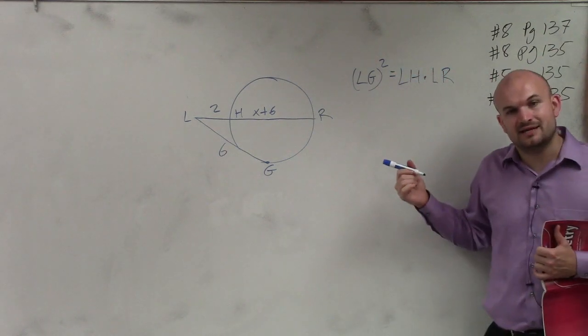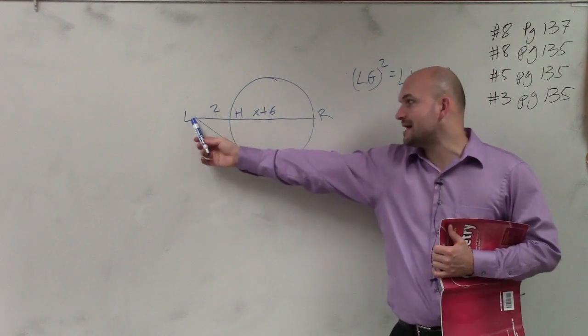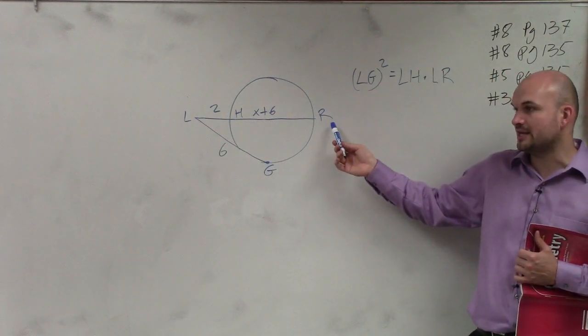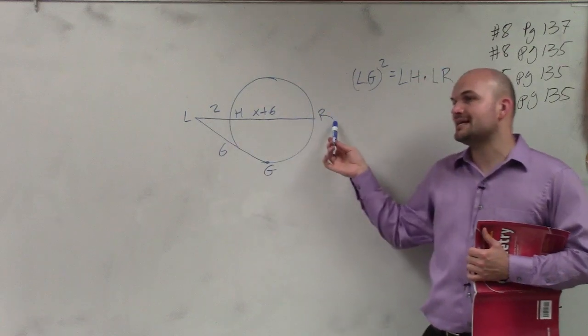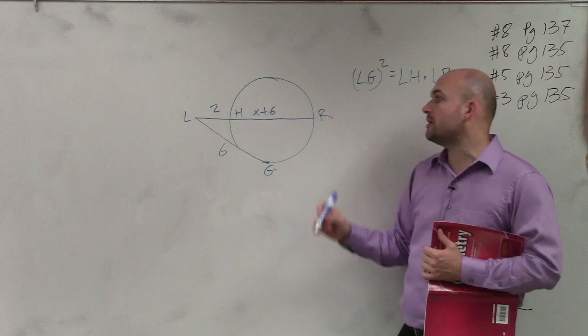So just like a secant line, when it was the distance from the point to the circle times the whole length of the secant line, you multiply that. Instead of now when you just have a tangent line, then you're just going to multiply it by this length squared.